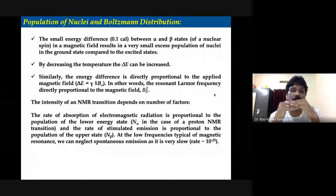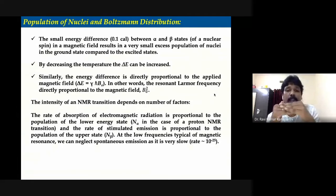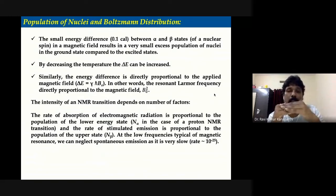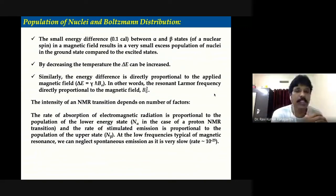In the presence of a magnetic field, the two nuclear energy states — alpha and beta, or the plus-half and minus-half states — are degenerate with no field. But if you keep them in an external magnetic field of strength B0, there is a separation. Once you have these two states, how many nuclei will be in the ground state and how many in the excited state is something related to the sensitivity of the NMR technique.